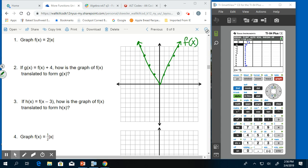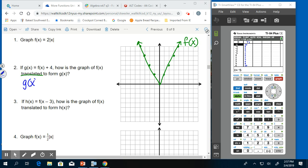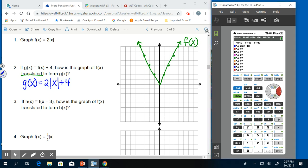So now it says if g of x equals f of x plus 4, how is the graph of f of x translated to form g of x? So we know right away it's a translation, which means that it's going to be shifted somehow. We're going to take our f of x and replace it with f of x in g of x. So we have g of x equals 2 absolute value x plus 4. We can put that into our calculator. I'm just going to add 4 at the end. Pull up the table and we have our new graph.